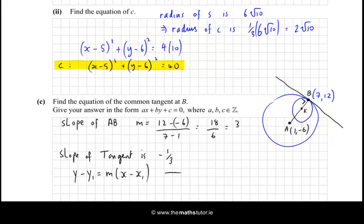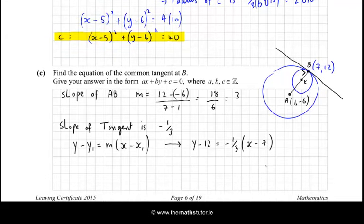And all I need to do is substitute in here now the point (7, 12). So I have y - 12 equals m, which is -1/3, times (x - 7). And the easiest way to tidy that up is to multiply across by 3. So you have 3y - 36 equals -x + 7. So that's 3y - 36. Let's bring everything to one side and I get x + 3y - 36 - 7 is -43 equal to 0.